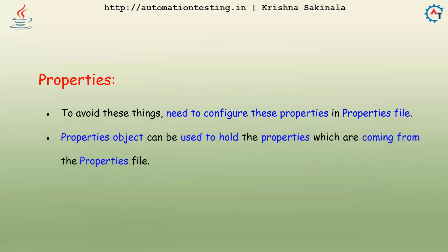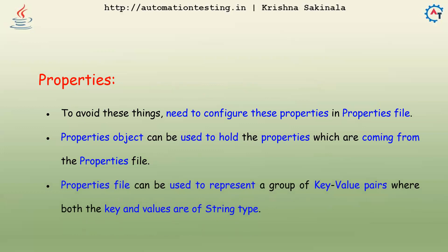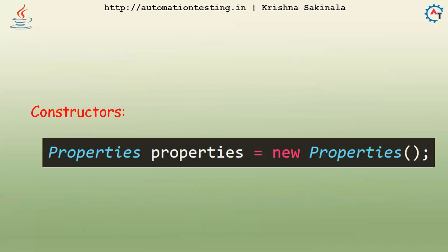A Properties object can be used to hold the properties coming from the properties file. The Properties file can be used to represent a group of key-value pairs where both key and value are of String type. Whatever you mention in the properties file, both keys and values are considered as strings. There is only one constructor: Properties p = new Properties().